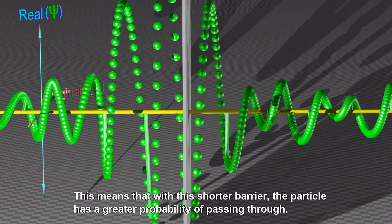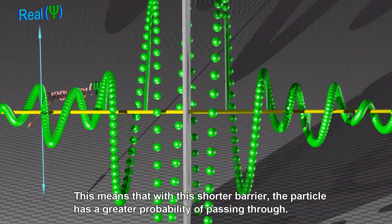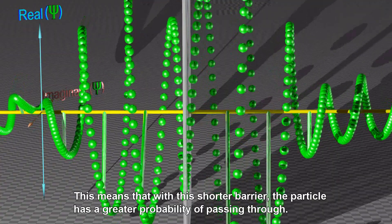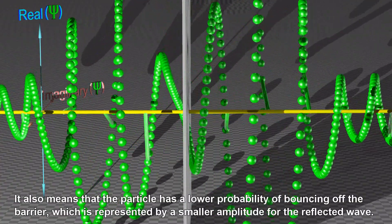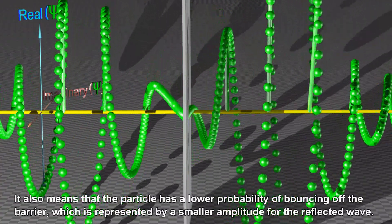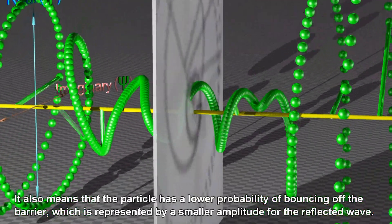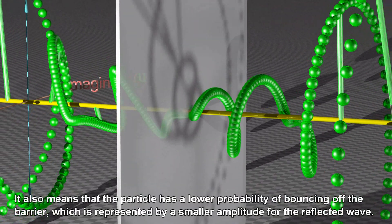This means that with this shorter barrier, the particle has a greater probability of passing through. It also means that the particle has a lower probability of bouncing off the barrier, which is represented by a smaller amplitude for the reflected wave.